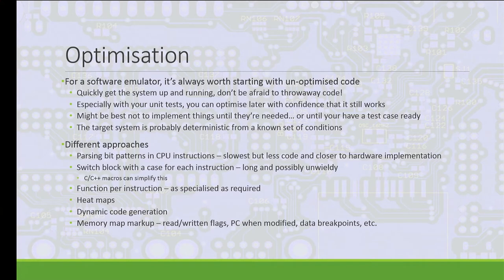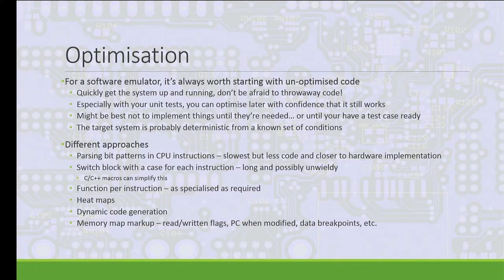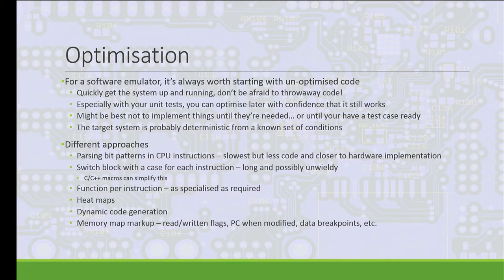Donald Knuth famously said premature optimization is the root of all evil, and that applies very much to emulation. For most systems you're probably not going to be hitting the boundaries of execution time unless it's a very current system. It's worth starting off with unoptimized code, even if it actually runs slower than the thing you're trying to emulate - just for the ability to check it's correct. If you make a mistake, it's better to change it in one place than all your optimized variants. If you've done test-driven development, you can replace all that code and know it'll still work when tests pass.